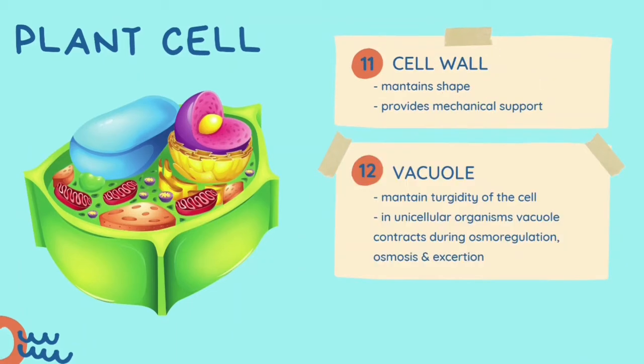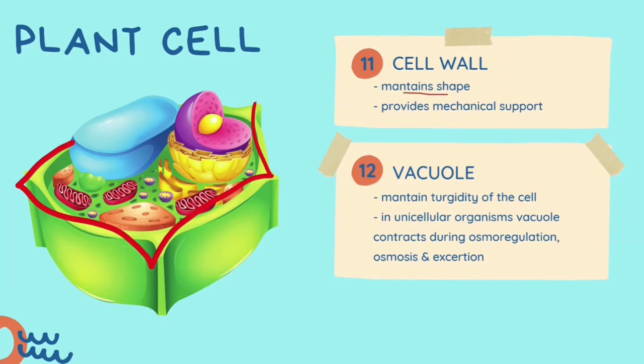Plant cells also have a cell wall, which is not present in animal cells. The cell wall is a strong and rigid outer layer made from cellulose fiber. Unlike the plasma membrane, the cell wall is fully permeable to any substance. The cell wall functions to maintain the shape of the cell and to provide mechanical support to the plant cell.